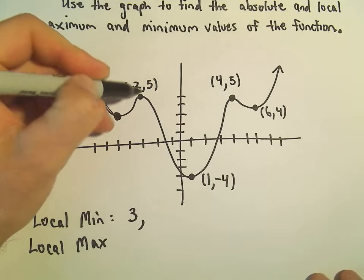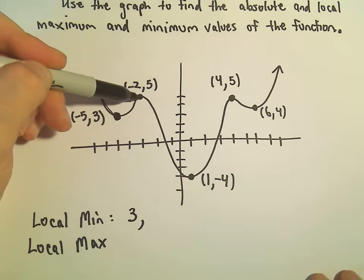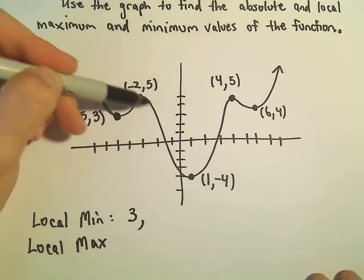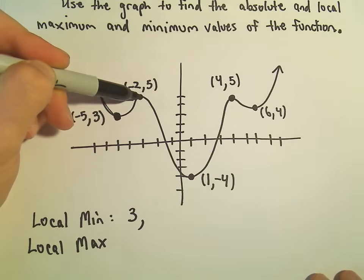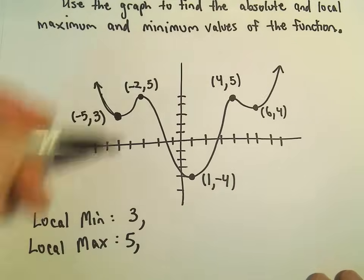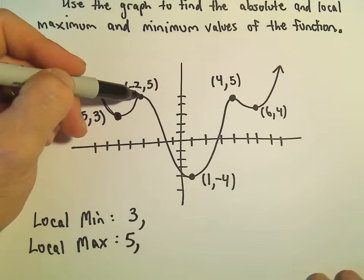When we get to this point negative 2 comma 5, notice this is kind of like a little top of a hill. That would be considered a local maximum. So we could say we have a local maximum at the y value of 5.